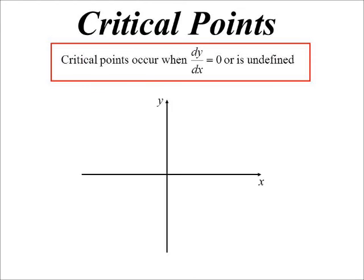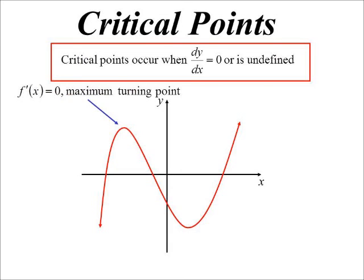So, let's have a look. There's a random graph. It's probably a cubic. It's got a couple of stationary points there. So yes, we have a critical point. That one we call a maximum turning point. Then there's one down the bottom there we'd call a minimum turning point.